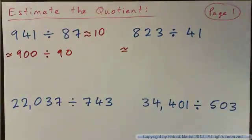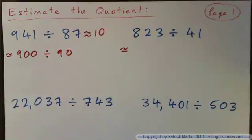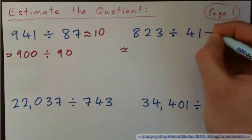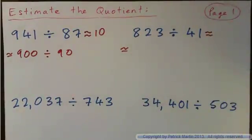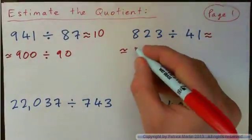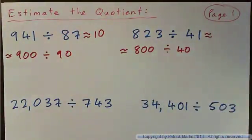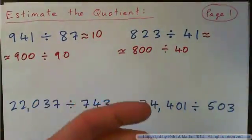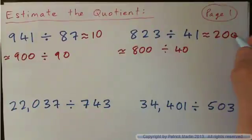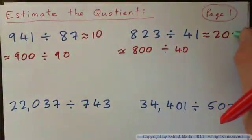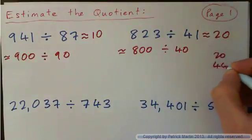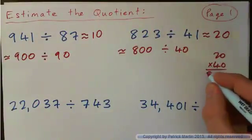How about the next one? Round this number to the nearest hundred and this one to the nearest ten. So 841 is approximately 800 and 43 is approximately 40. We have 800 divided by 40. Now 10 forties is 400, so 20 forties would be 800. So this is about 20. You can check it: 20 times 40 is 800.